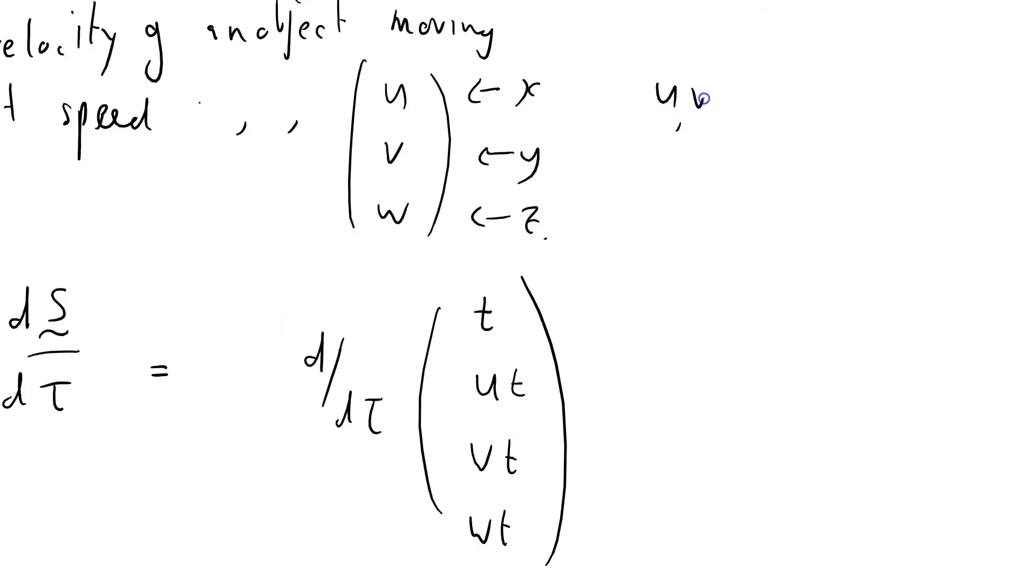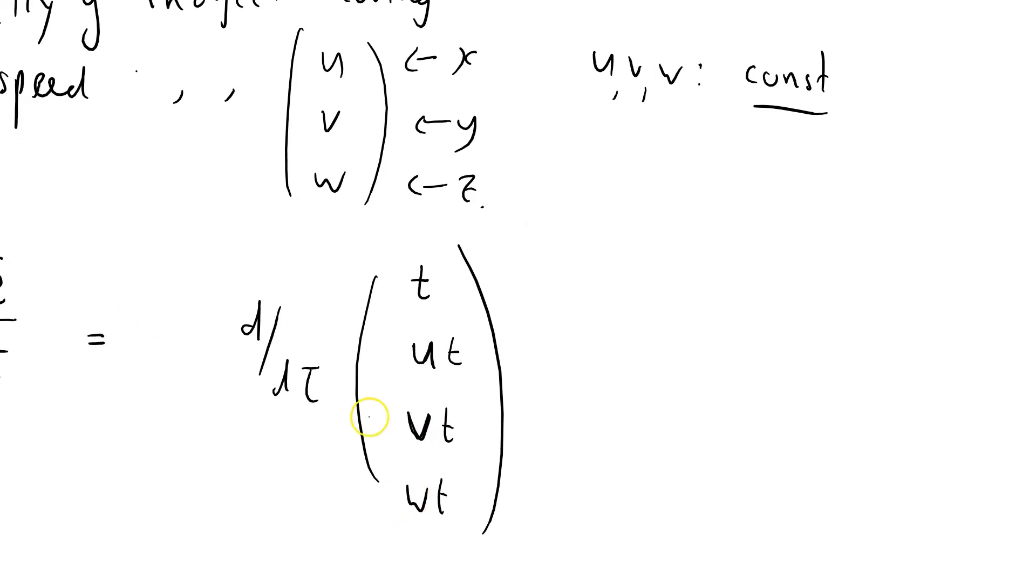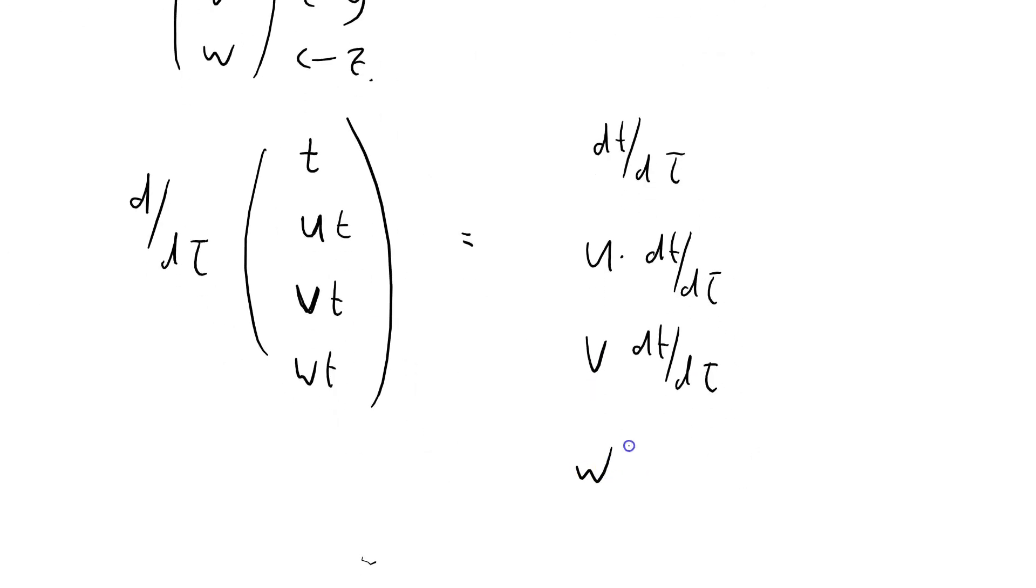These are constants. u and v and w are constants. So when I start to differentiate here, this u and v and w, because they're constants, they just disappear. Well, they don't disappear, but they commute past the operation. So that's dt by dτ. u times dt by dτ. This one is v dt by dτ. And the final one is w dt by dτ.